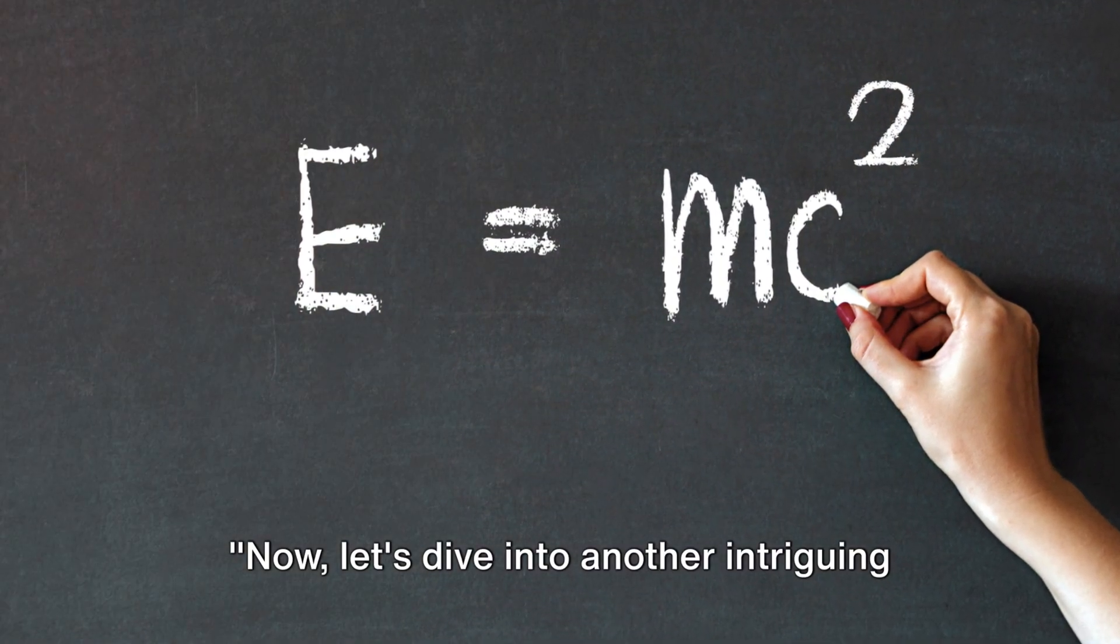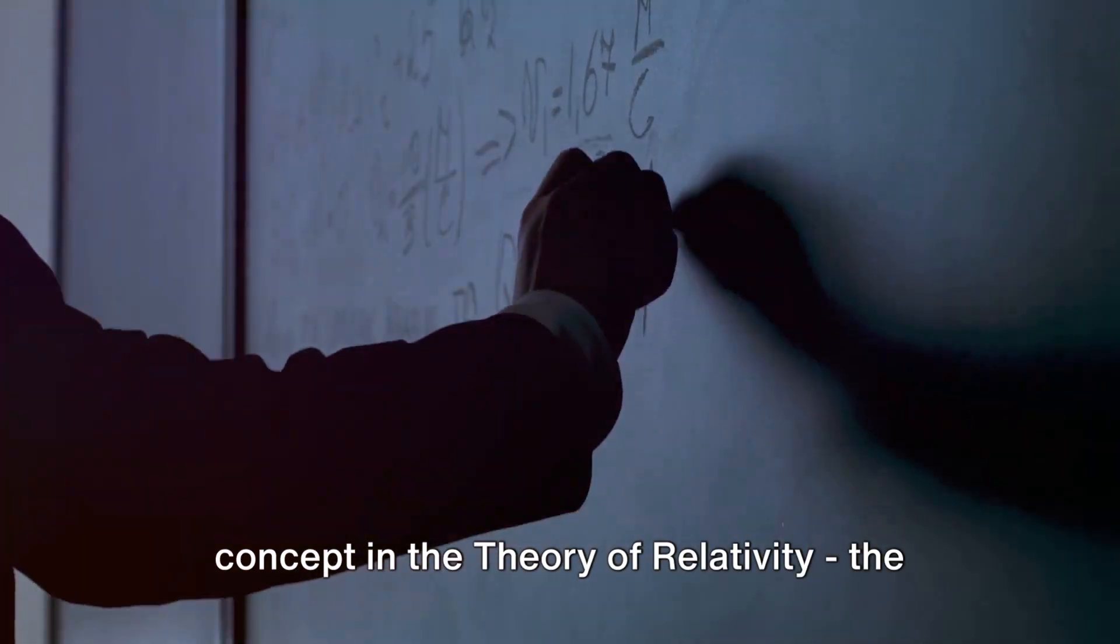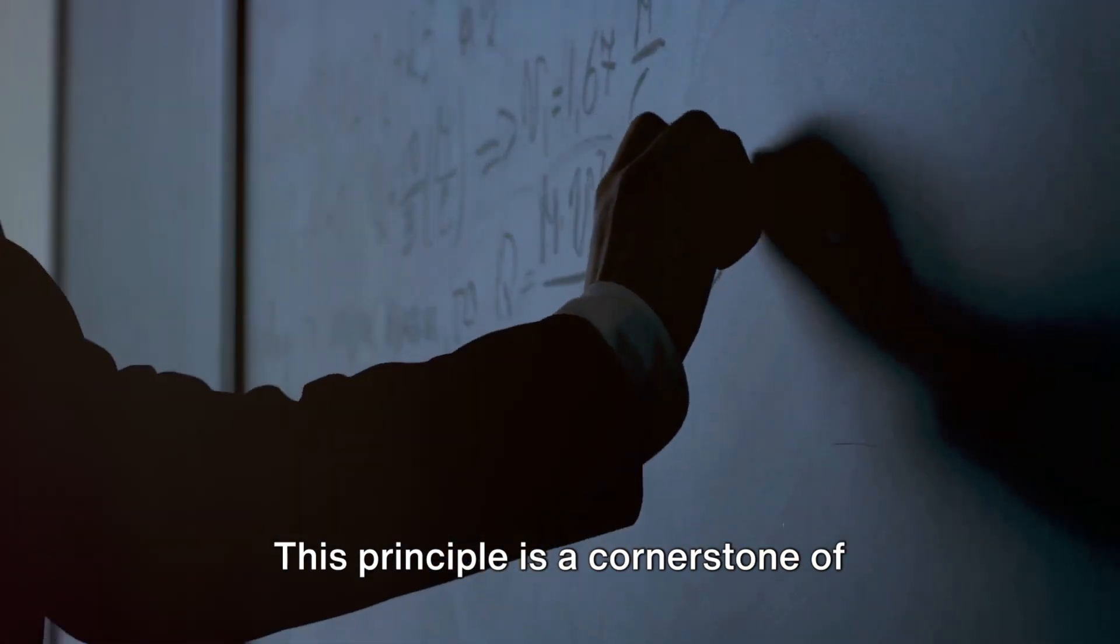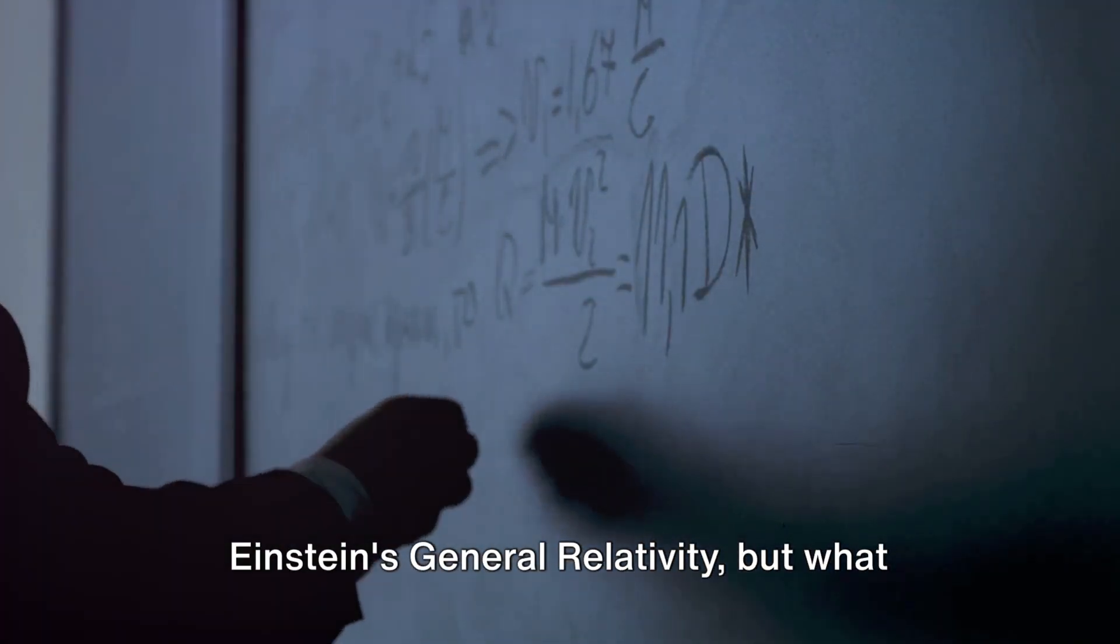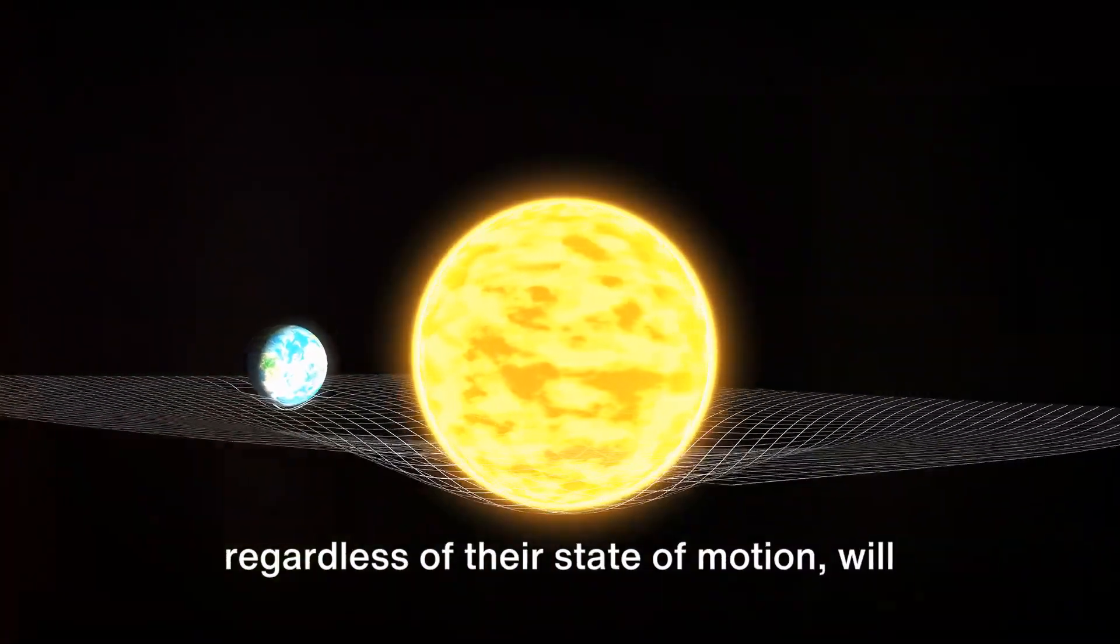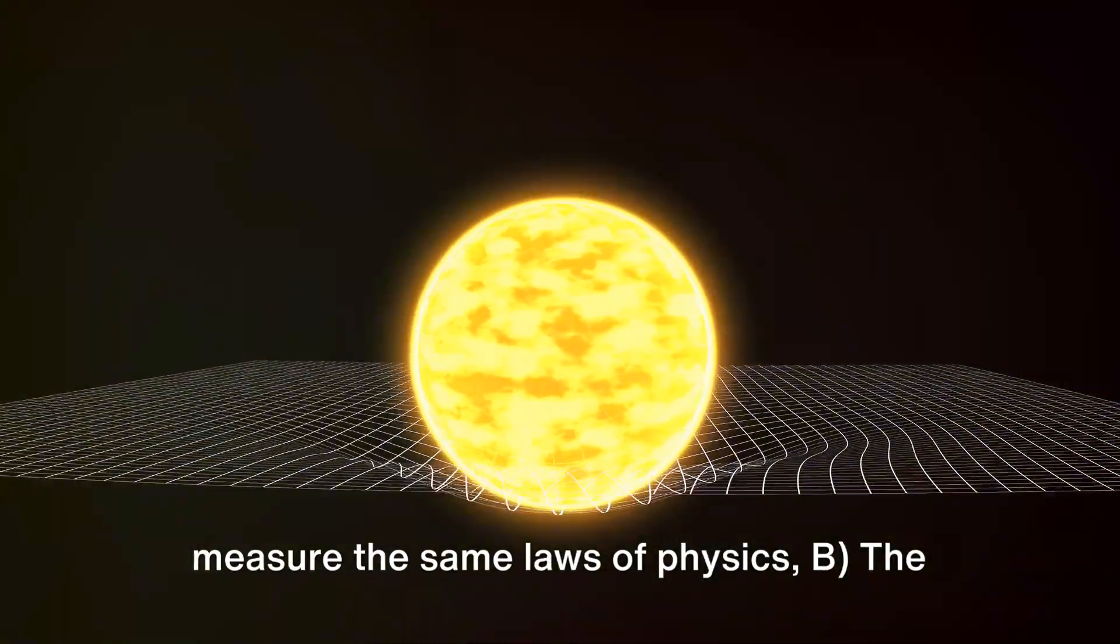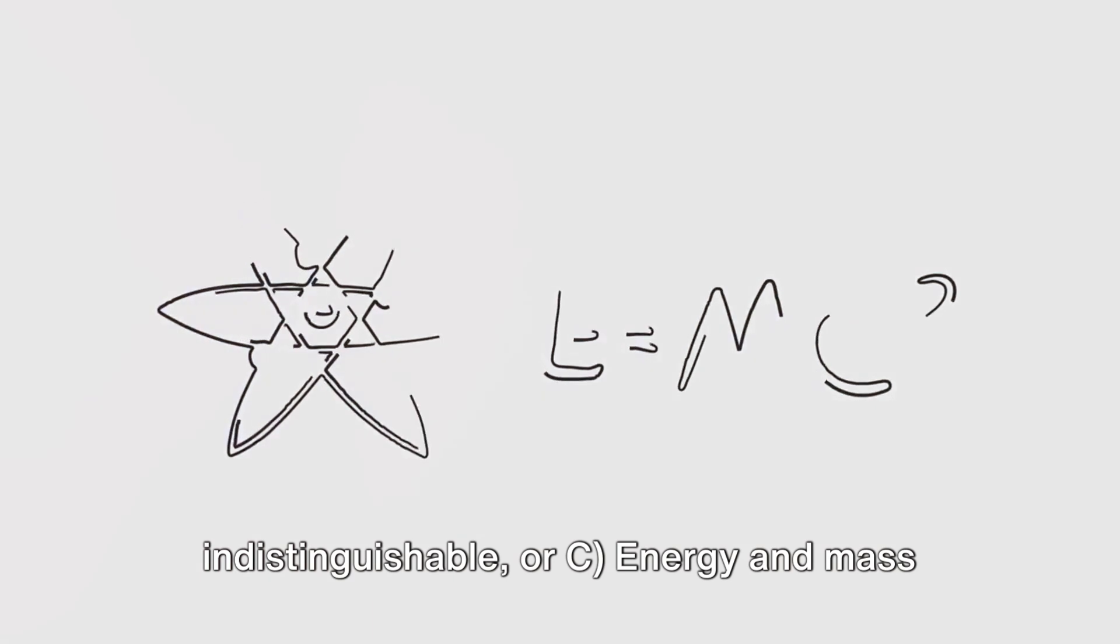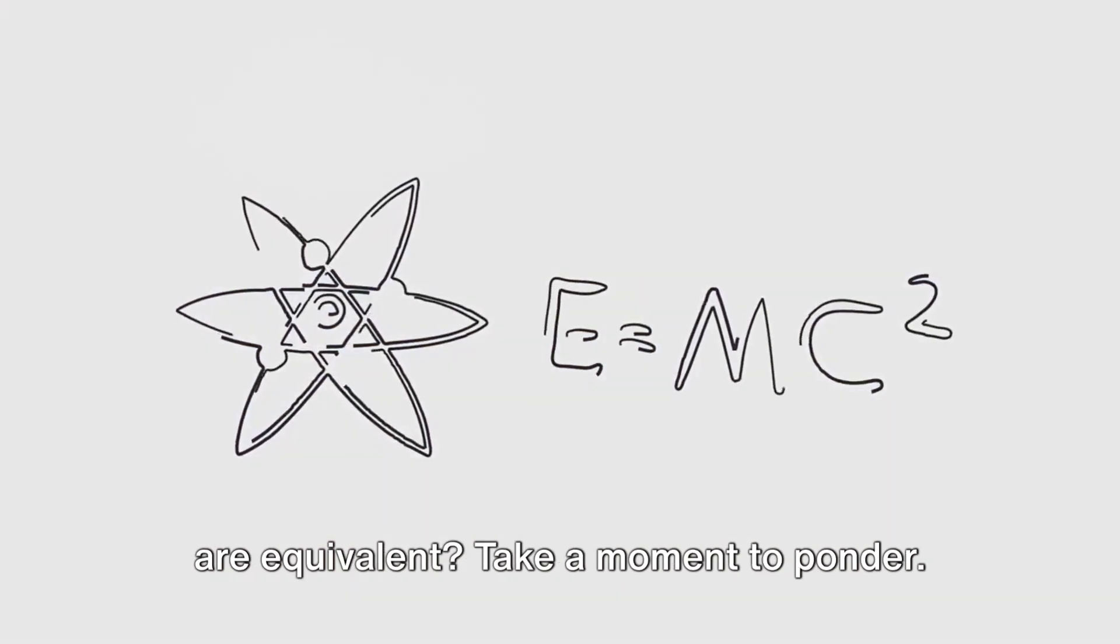Now let's dive into another intriguing concept in the theory of relativity, the principle of equivalence. This principle is a cornerstone of Einstein's general relativity. But what does it mean? Is it A. All observers, regardless of their state of motion, will measure the same laws of physics. B. The effects of gravity and acceleration are indistinguishable. Or C. Energy and mass are equivalent.